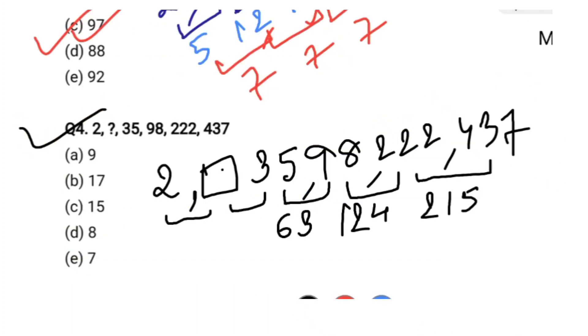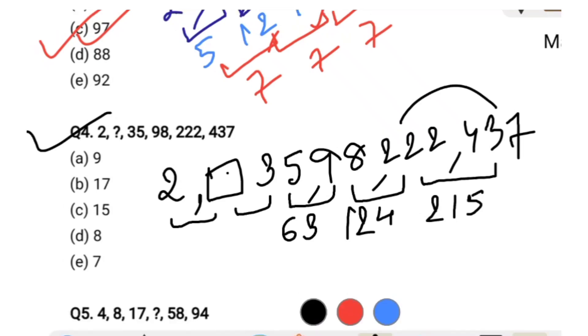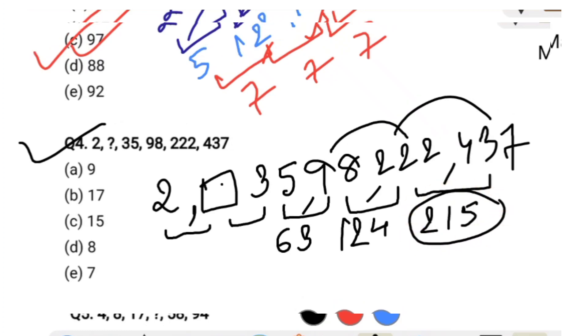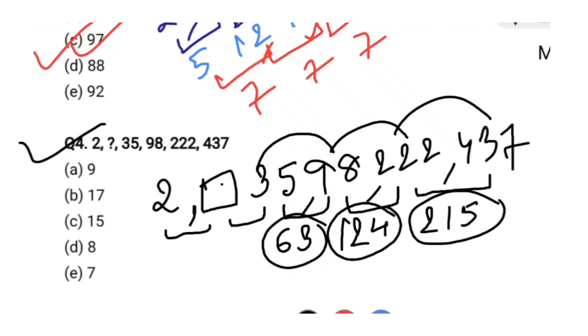Let's see question number 4. If we arrange the series like that and if we subtract from second term to the first term, let's see 435 minus 222 is equal to 215. Again, 222 minus 98 is 124. Again, 98 minus 35 is 63 and there is a box and then 2.